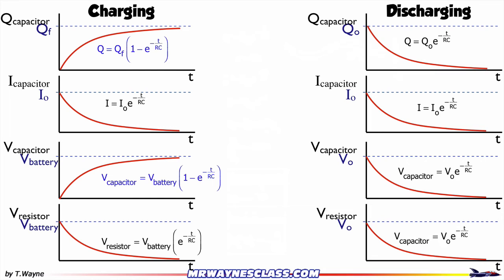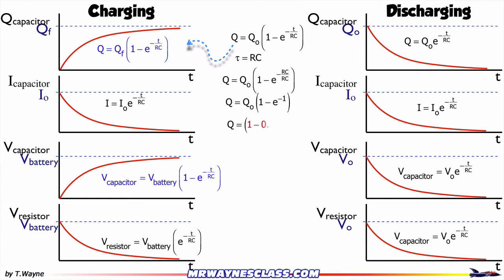Let's look at what happens when it charges. Q equals Q-naught times (1 minus e to the negative t over RC). Remember, the time constant is RC — another way of measuring time not in seconds but in number of time constants. At one time constant, you might think it's going to be 37%, except the curve is different. This time it's actually 1 minus 37%, so after one time constant, 63% of the charges have filled up the capacitor.